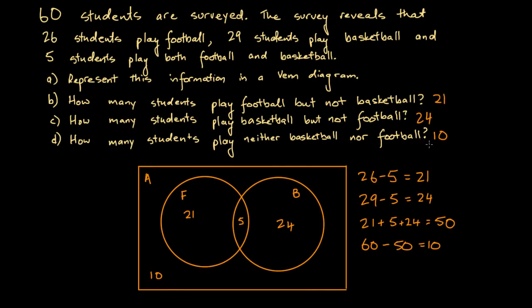There's a valid question about what this has to do with probability. Imagine instead of 'how many play football but not basketball,' we asked: suppose a student is chosen at random — what is the probability they play football but not basketball? There are 60 equally likely outcomes and 21 meet the condition, so the probability is 21 over 60, which reduces to 7 over 20.